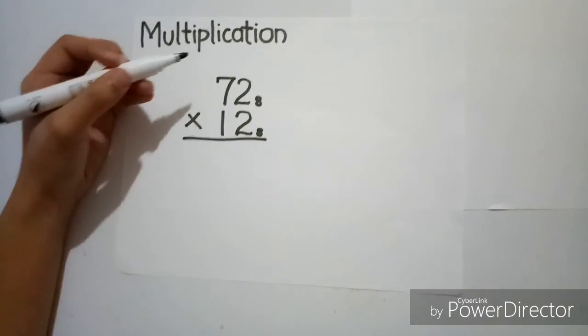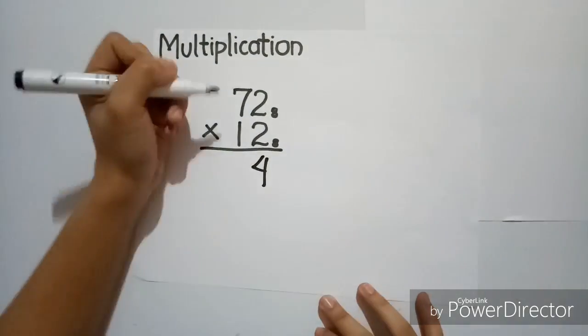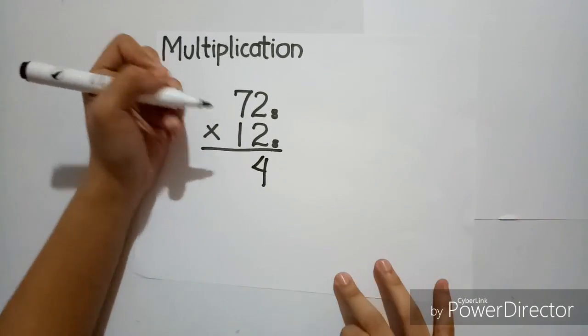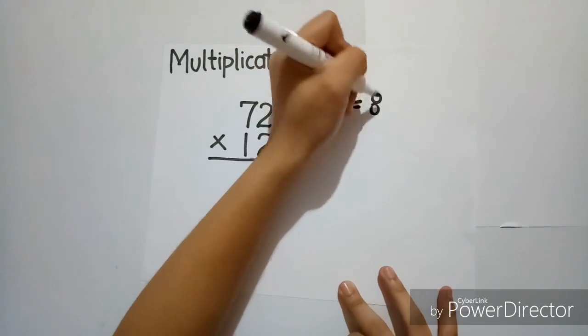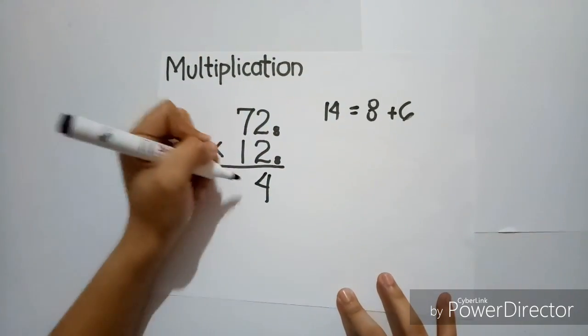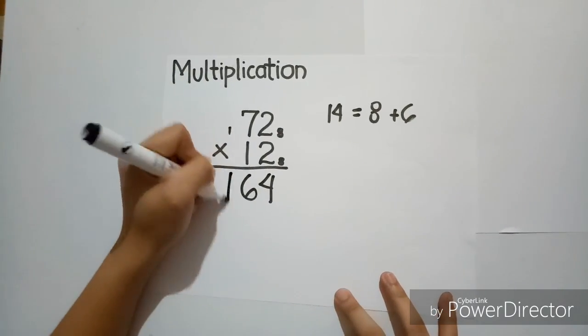So, 2 times 2 is equal to 4, and 7 times 2 is equal to 14, which is equal to 8 plus 6. So, let's take 6, then carry 1, then bring it down.